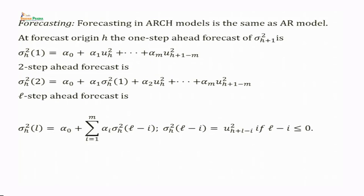Forecasting in ARCH models is the same as in autoregressive models, because ARCH models are parallel to autoregressive models. ARCH models are for u_t squared, and autoregressive models are for y_t. In ARCH models, u_t squared is written as a linear function of past values of u_t squared; in autoregressive models, y_t is written as a linear function of its past values.